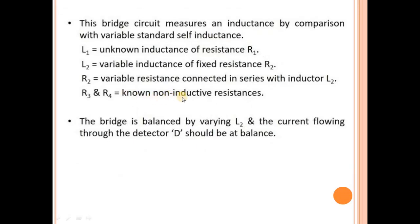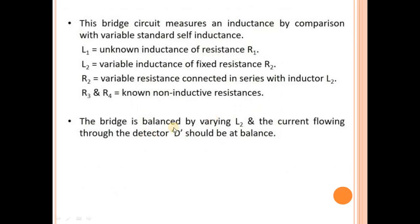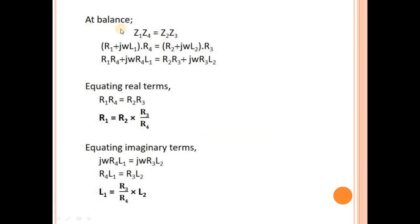R3 and R4 are non-inductive resistances. The bridge is balanced by varying L2. The current flowing through the detector D should be zero at balance. To balance the bridge, vary the inductor L2.